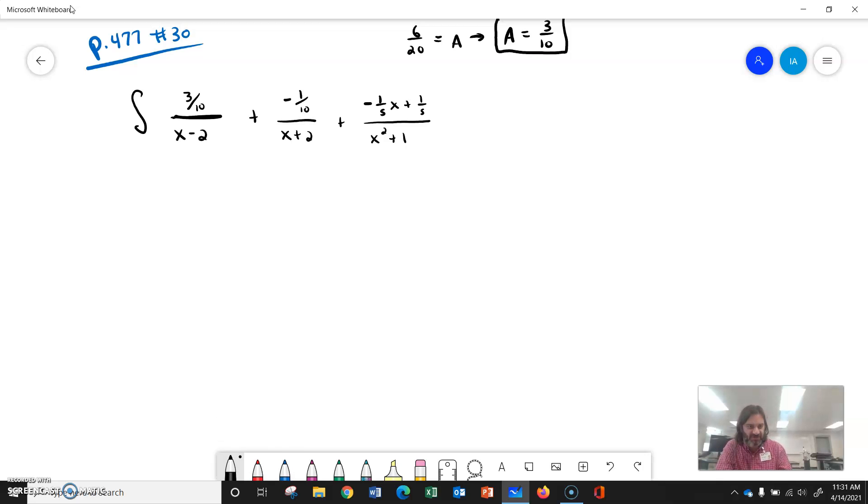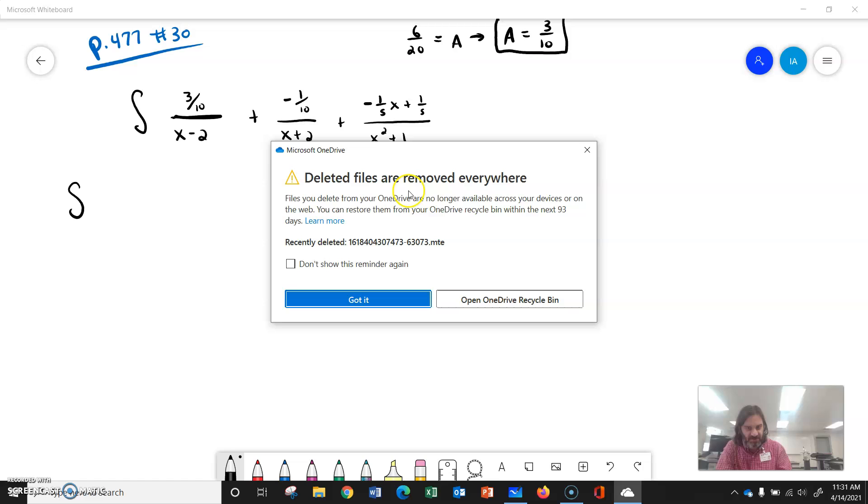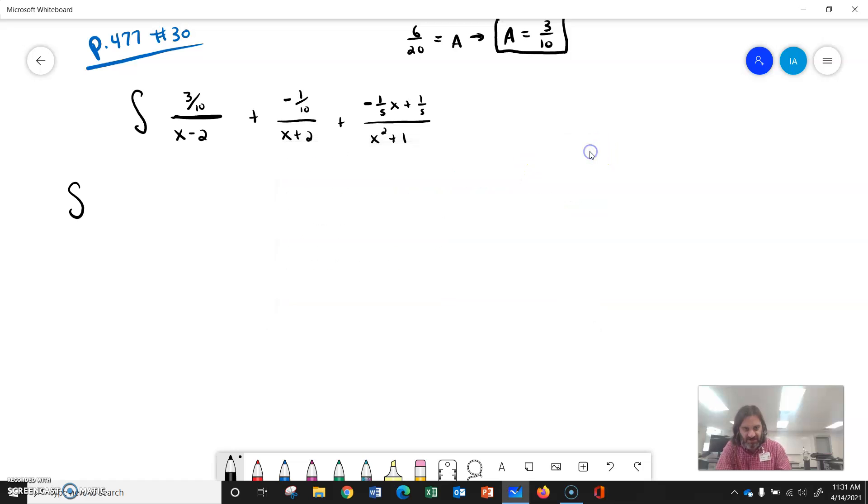The first partial fraction was 3 tenths over x minus 2. The second one, so we're going to integrate that, the second one is negative 1 tenths over x plus 2.